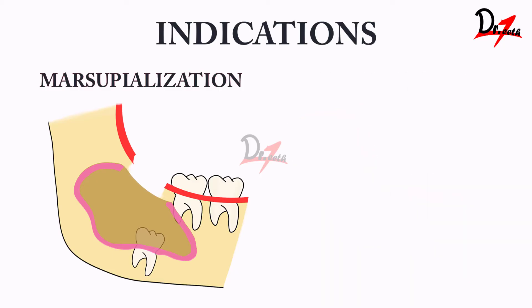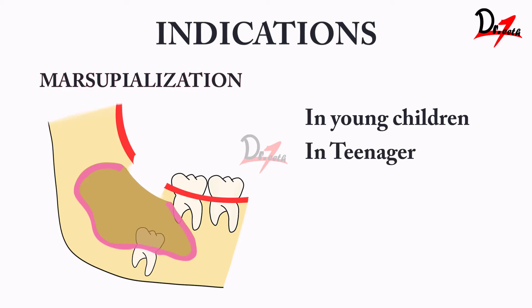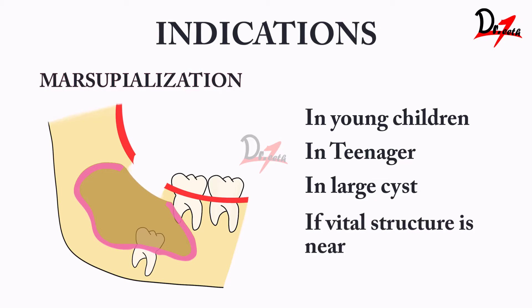Marsupialization is indicated in young children because it will preserve the tooth germ and help in normal eruption. Similarly, if the patient is a teenager, it will help in eruption of the unerupted tooth associated with the cyst. Another indication is when we have a large cyst — if you do enucleation, there could be a possibility of fracture. Also, if the cyst is very near to any vital structure, or there can be formation of an oronasal fistula or damage to a vital tooth, then we do marsupialization.